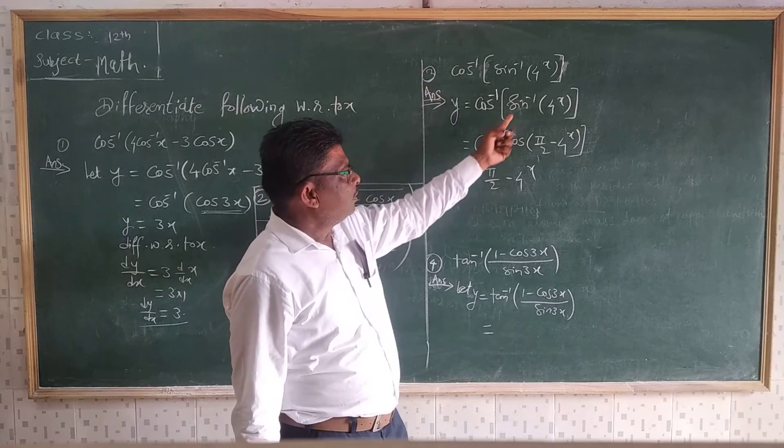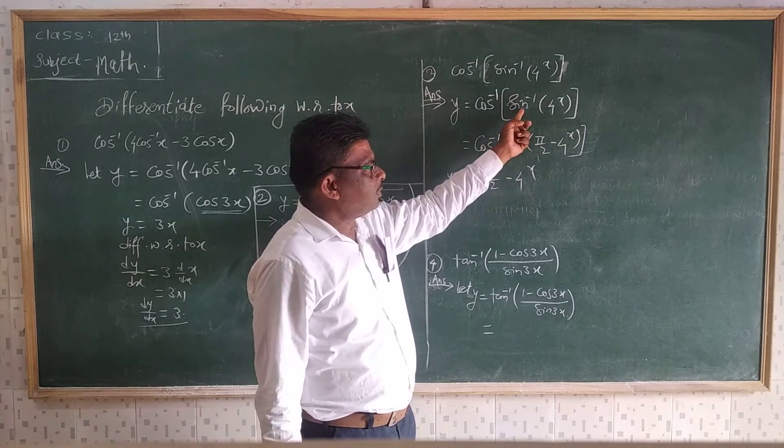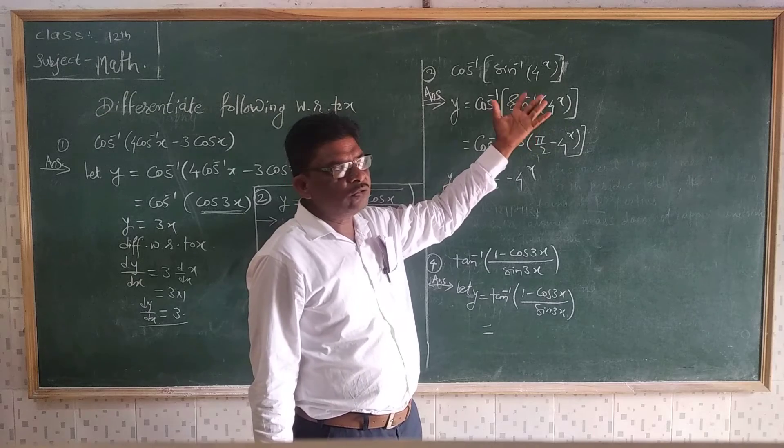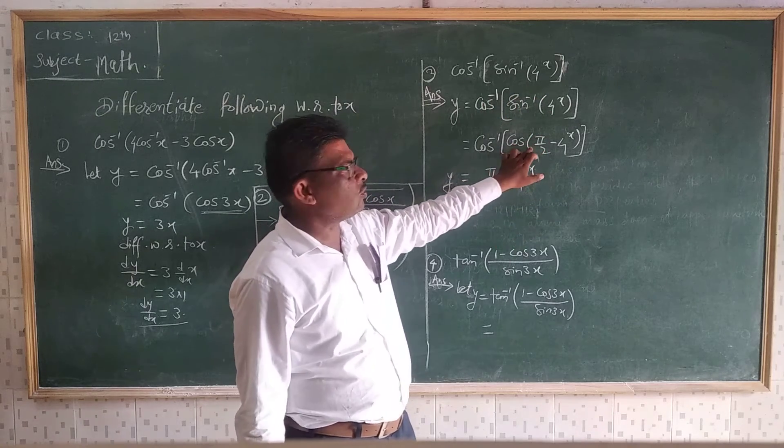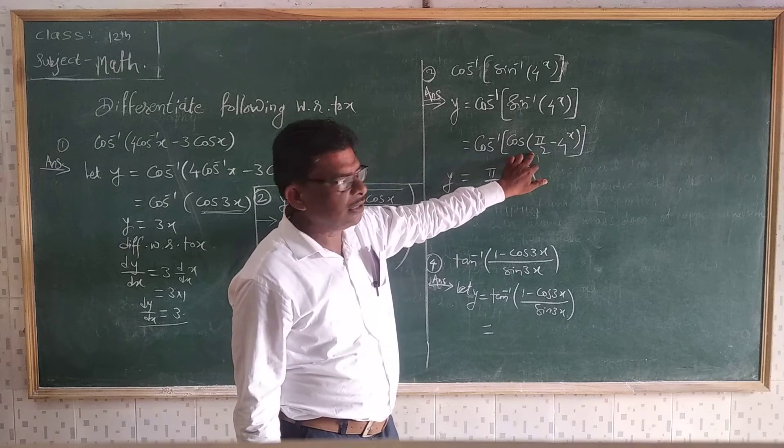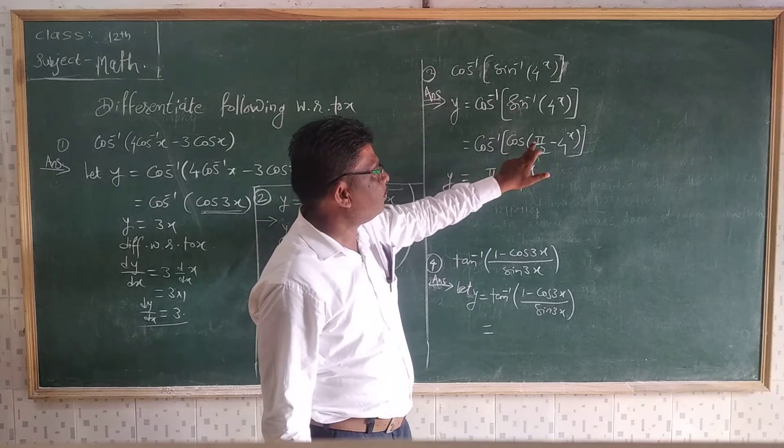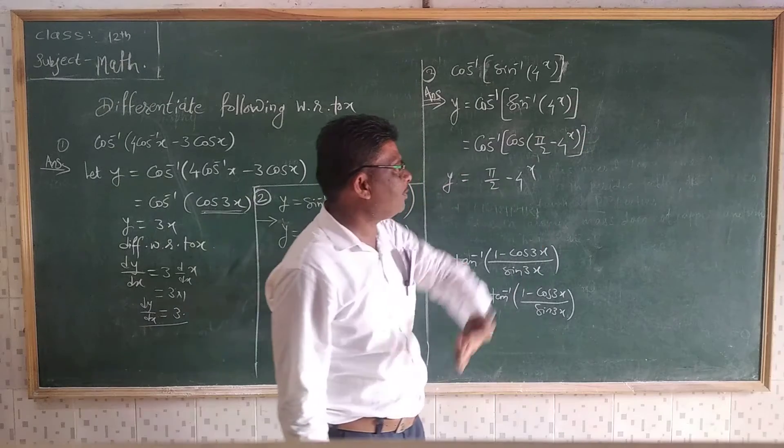That is cos inverse of, convert this sine into cosine by using this formula. Sintheta equal to cos(π/2 minus theta). That means cos of π/2 minus 4^X.